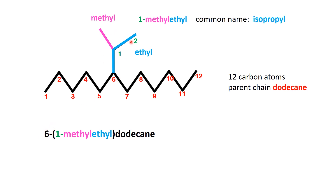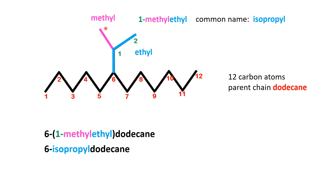Now let's name this substituent using its common name. In common nomenclature, the 1-methylethyl group is called an isopropyl group. The name isopropyl reflects its structure — a chain of 3 carbon atoms where the middle carbon is connected to a branching methyl group. Using this naming system, the full name of the compound is 6-isopropyldodecane.